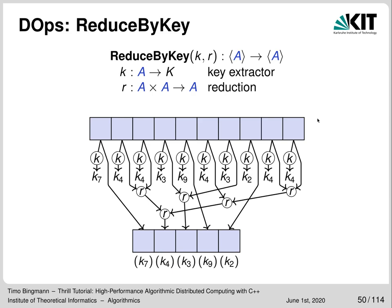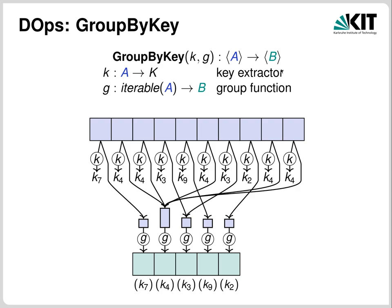ReduceByKey takes a DIA of type A, a key extractor function and a reduction function. The key extractor is applied to each item and all items with the same key are reduced using the reduction function. The keys are delivered in the output DIA in a random order determined by the hash function applied internally. GroupByKey is similar but delivers all items with the same key to the group function as an iterable stream or vector, meaning all these items have to be collected at the same processor — so you should always prefer ReduceByKey over GroupByKey whenever possible.